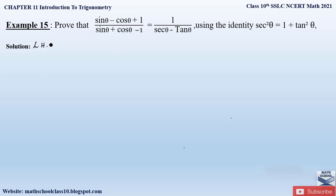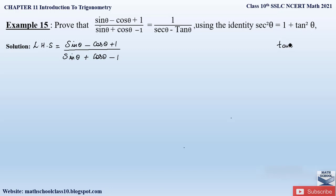Write down: LHS = (sin θ − cos θ + 1) divided by (sin θ + cos θ − 1). Since we have to use the identity sec²θ = 1 + tan²θ, and we know tan θ = sin θ / cos θ, we will divide the numerator and denominator by cos θ so that we get tan θ terms in both.